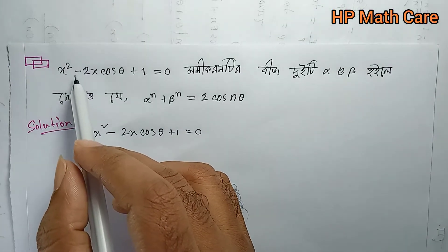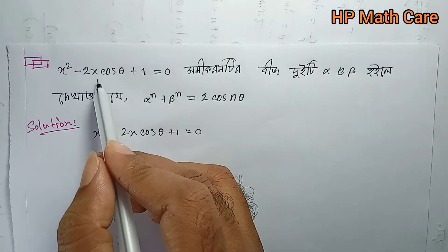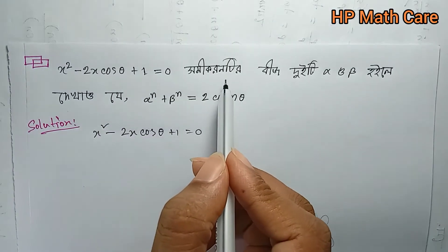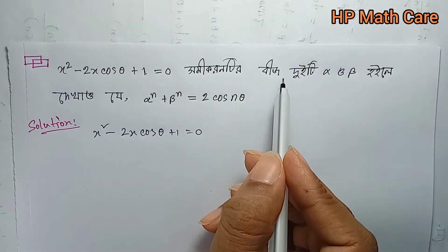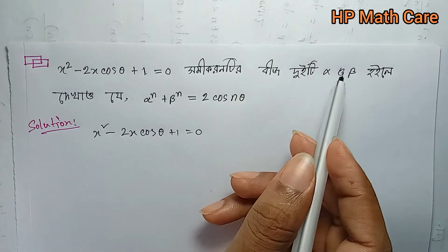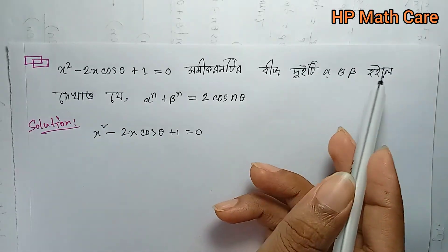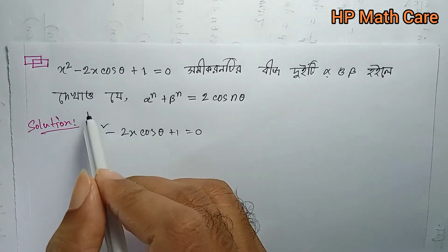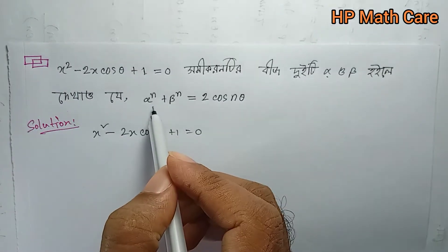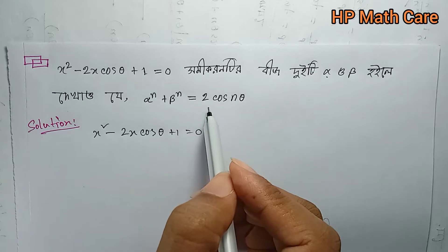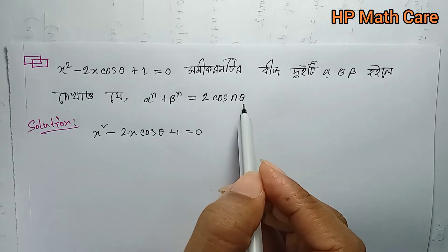The next step uses x squared minus 2x cos θ plus 1 equals 0. The roots are alpha and beta, with alpha times beta as the second step. The result is: alpha to the power n plus beta to the power n is equal to 2 cos(nθ).